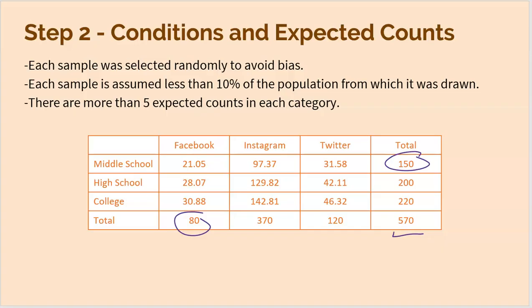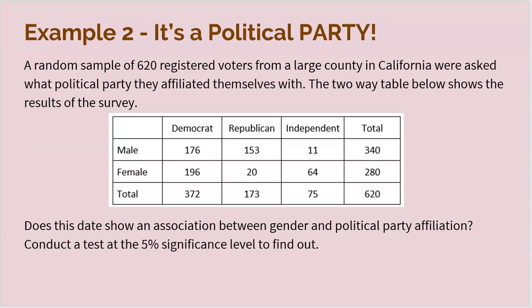That's it for step one and step two in this video. We're going to do one more problem, but we're only exploring steps one and two here. In Topic 8.6, we'll finish it off with the chi-squared values, the p-values, and the conclusion. Let's move on to the next problem — a test of independence.